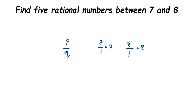There are infinitely many rational numbers between 7 and 8, but how do we find them when there seems to be no gap? The method is to find equivalent rational numbers of the given numbers — you can do this by multiplying or dividing both the numerator and denominator by the same number.